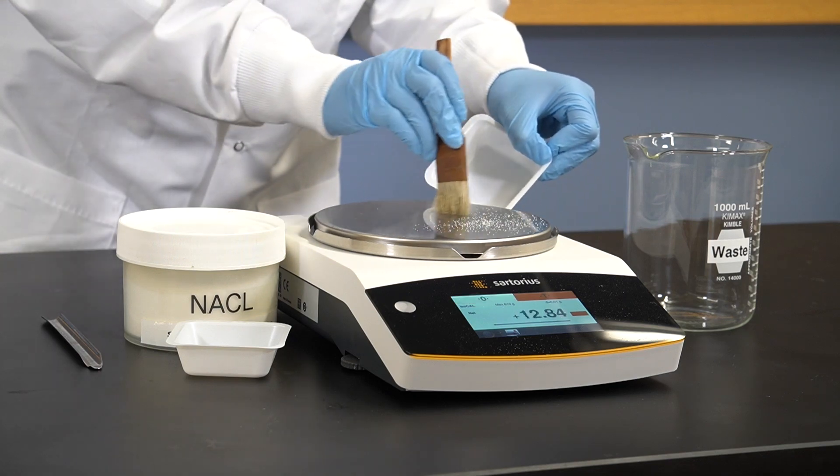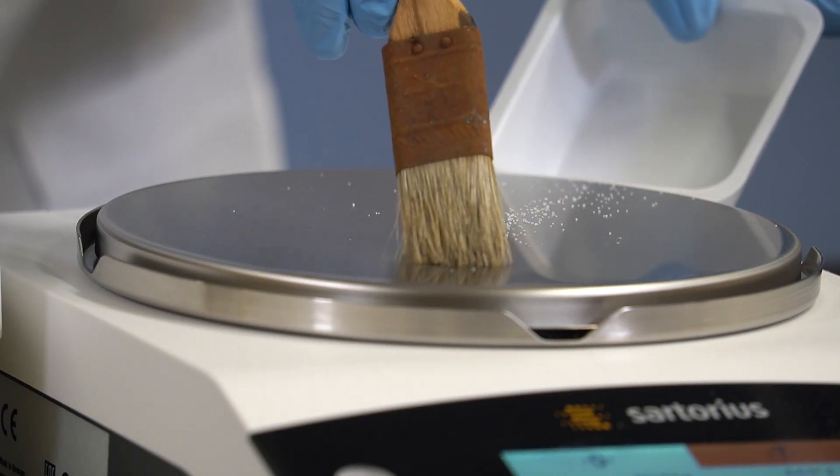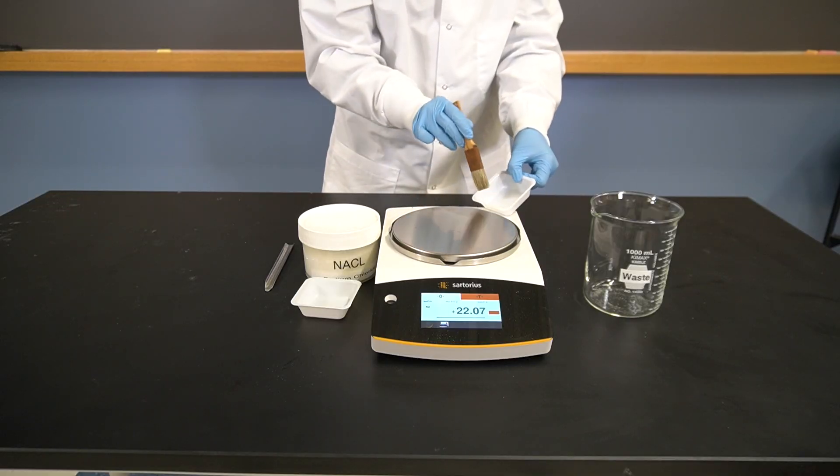First, we should clean the balance pan by brushing it off gently with a brush. This ensures that we do not have any debris that could be weighed in, giving us an inaccurate reading.